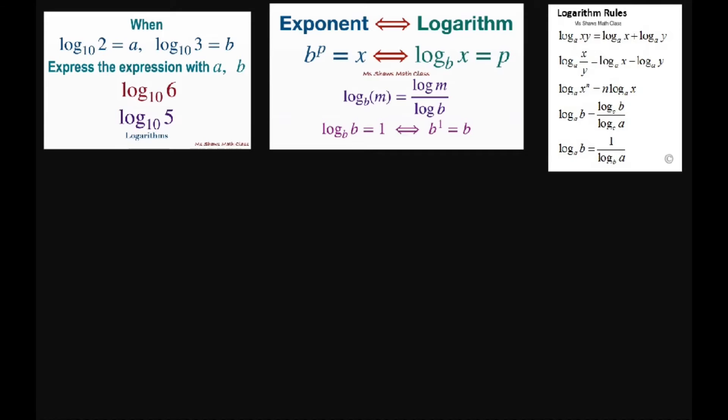All right, so for the first one we have log base 10 of 6. Now what I know is I know what log base 10 of 2 is and log base 10 of 3. We're looking on this left hand side of our log rules. So what I can do is write this as log base 10, and given that I have a 2 and a 3 here, write this as 2 times 3.